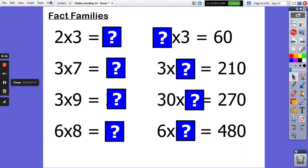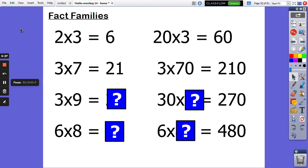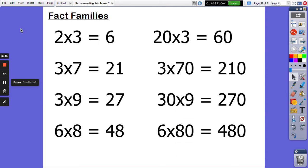Okay, let's make a start, shall we? 2 multiplied by 3 is 6. So what multiplied by 3 is 60? 20 multiplied by 3 is 60. 3 multiplied by 7 now. 3 multiplied by 7 is 21. So 3 times what is 210? 3 times 70. 3 multiplied by 9 is 27. 3 multiplied by 8 is 48. 6 multiplied by 8 is 48. 6 multiplied by what makes 480? 6 multiplied by 80. Well done if you got those ones correct.